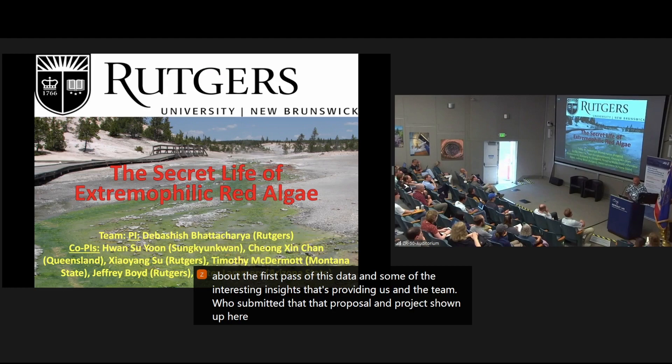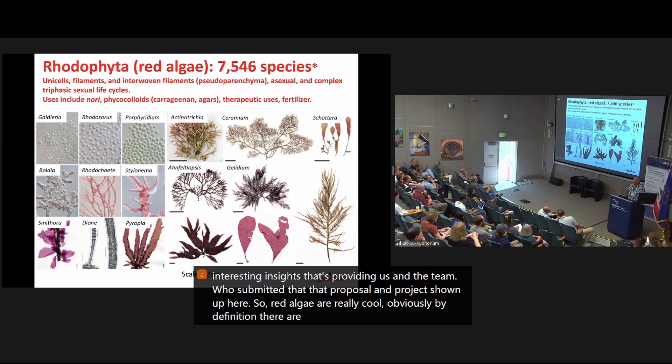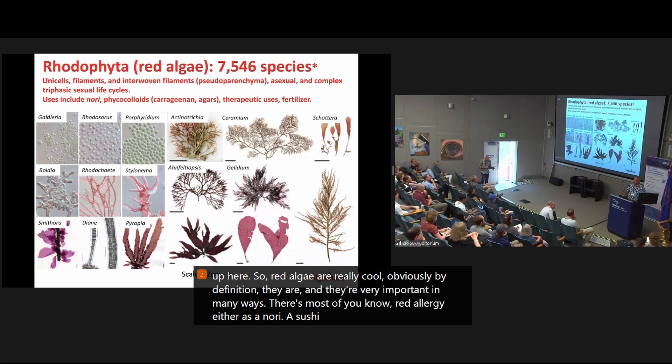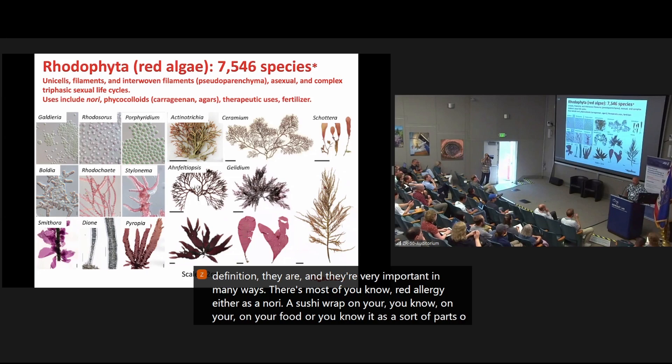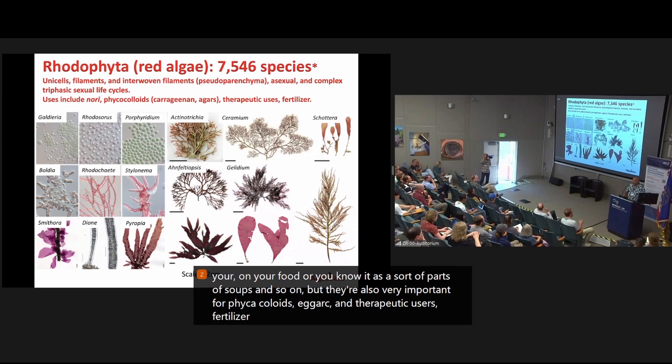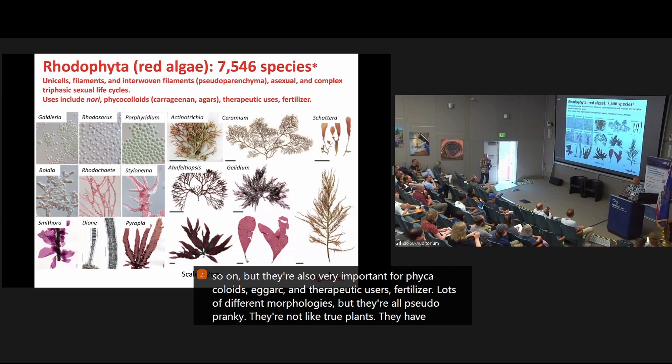I'll talk about the first pass of this data and some of the interesting insights that's providing us and the team who submitted that proposal and project shown up here. So red algae are really cool, obviously, by definition, and they're very important in many ways. Most of you know red algae either as a nori sushi wrap on your food, or as parts of soups and so on, but they're also very important for phycocolloids, agar carrageenan, therapeutic uses, fertilizer.